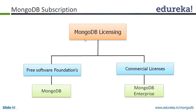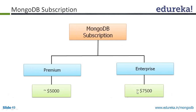Let's understand about MongoDB subscription. MongoDB is not really a license — it is subscription-based. There are two types: one is free, which is called Community Edition, and the second one is a Commercial License, which is called MongoDB Enterprise. In Enterprise Edition, there are two kinds of subscription: Premium and Enterprise.